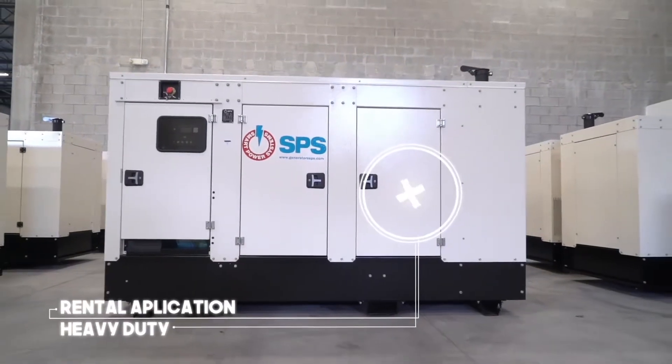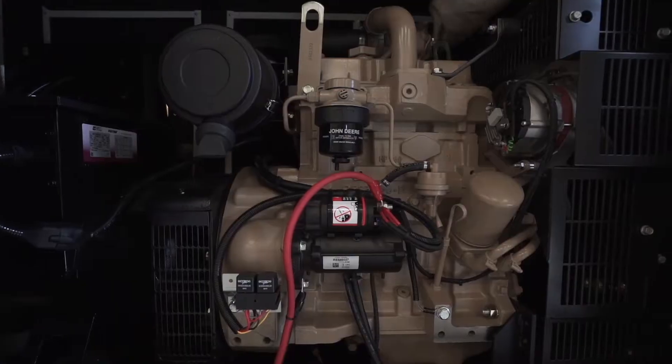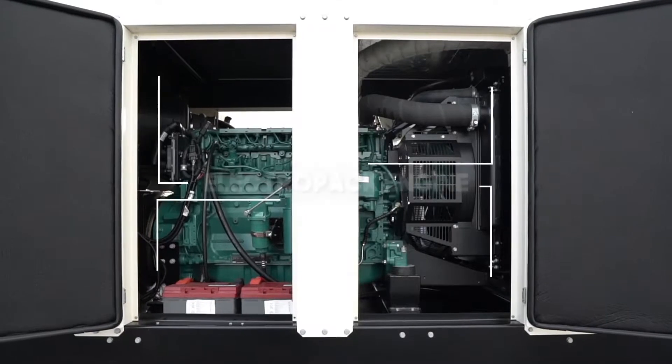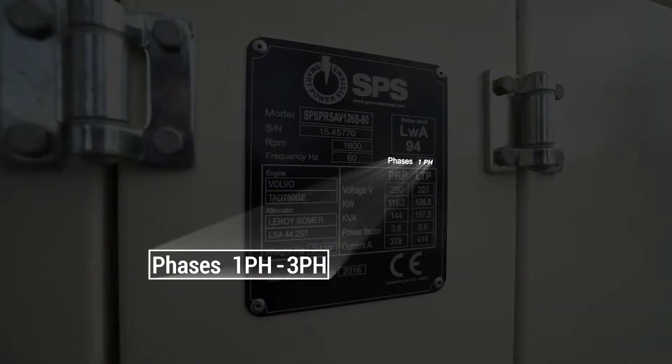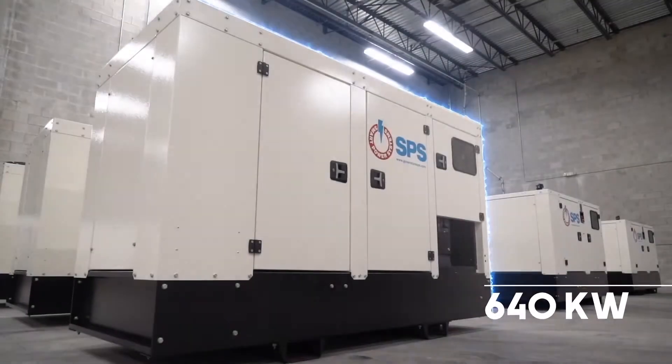Rental application, heavy duty. These are robust diesel engines running at 1,500 to 1,800 rpm, assembled with liquid-cooled alternators, single-phase and three-phase, with power from 7.5 to 640 kilowatts.